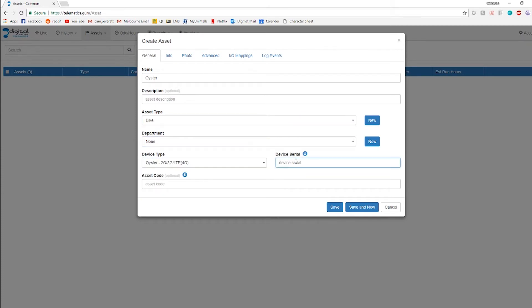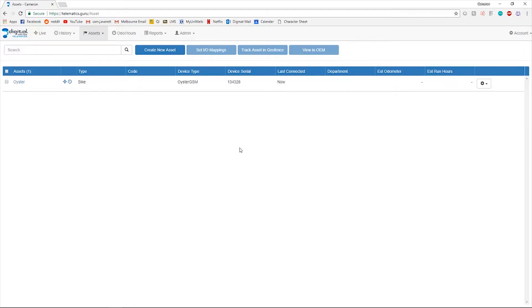Here, I'm going to go ahead and add the Oyster on our tracking platform, Telematics Guru. Clicking the Live Tracking tab, you'll be able to view the location of your asset on Google Maps.